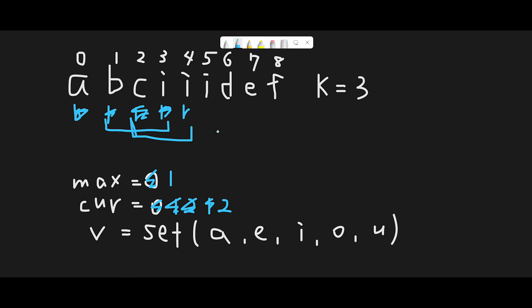The second condition simply checks the left side of the window and decides whether to subtract minus one from current_vowels based on whether that character is a vowel or not. Before moving next, current_vowels is 2 and max is 1, so we update max to 2. Then we find another 'i', which is in the vowels set, so we add plus one to current_vowels. We check index five minus three equals two — 'c' is not a vowel, so we do nothing. Max_vowels is now 3.